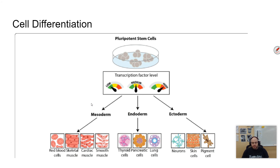When you have cell differentiation, a vast majority of the genetic code is being repressed or inhibited from being expressed. There's no reason for a skin cell to start expressing bone things. This is why you have groups of cells that form a tissue — a tissue being a group of similar kinds of cells — and again, this all has to do with gene expression.